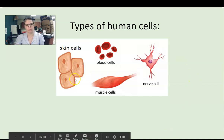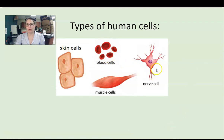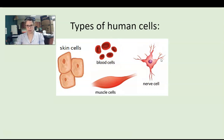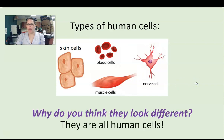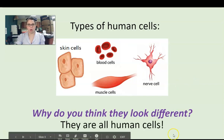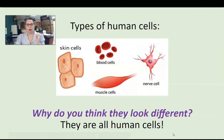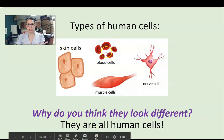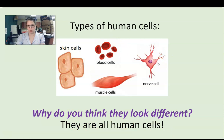So these are just a few examples: we have skin cells, blood cells, nerve cells that are in our brain and all of our nerve endings, and muscle cells. So why do they look so different? They're all human cells — why are they so different? They look so different because of what they do as a function. What is their job? It has a lot to do with how they look.